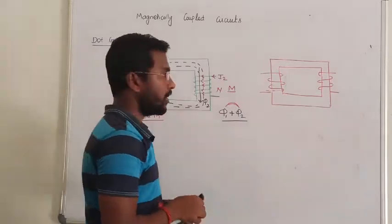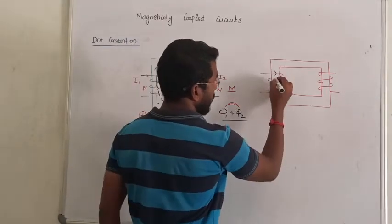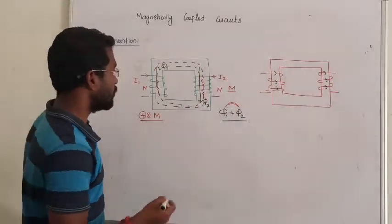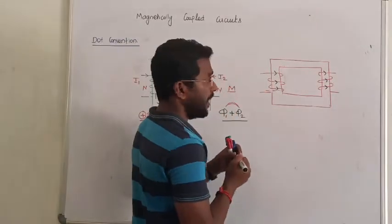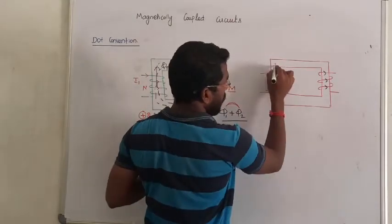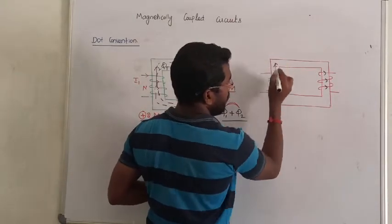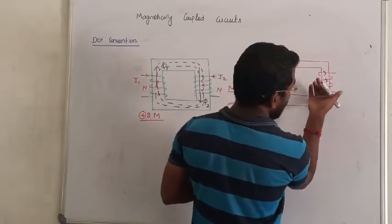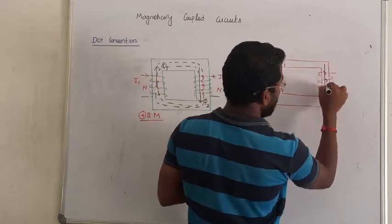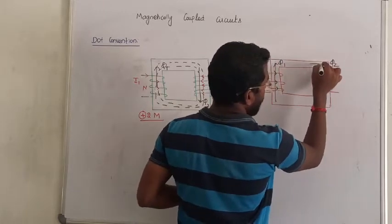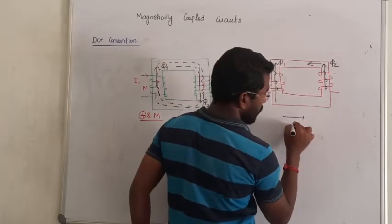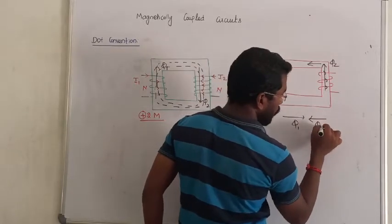First case: current is entering and going like this. Second case: current is entering in the opposite direction. Apply the right-hand thumb rule. In the first case, flux is upward. In the second case, with current reversed, the flux direction also reverses. So phi-1 rotates one way and phi-2 rotates the opposite way — phi-1 and phi-2 are opposing each other.